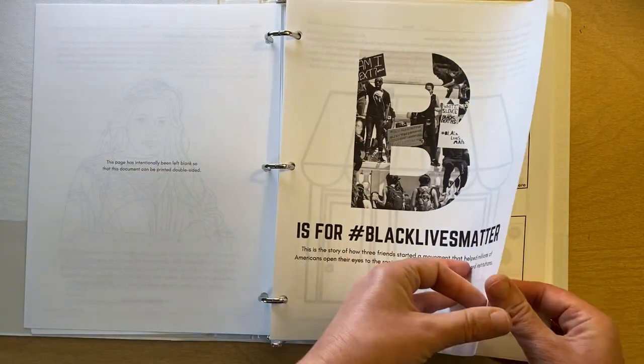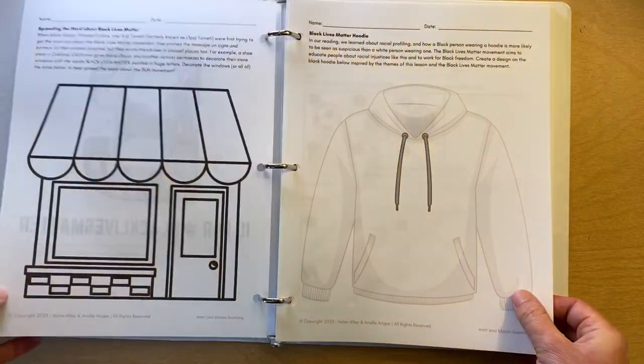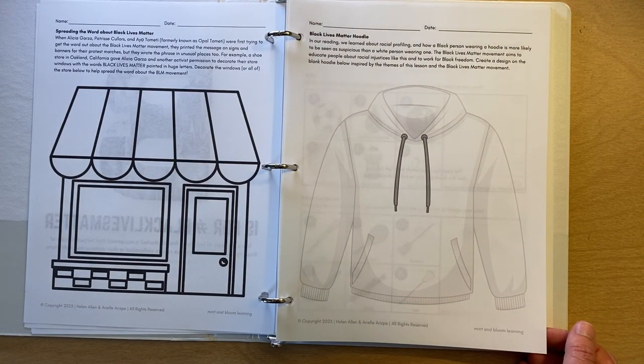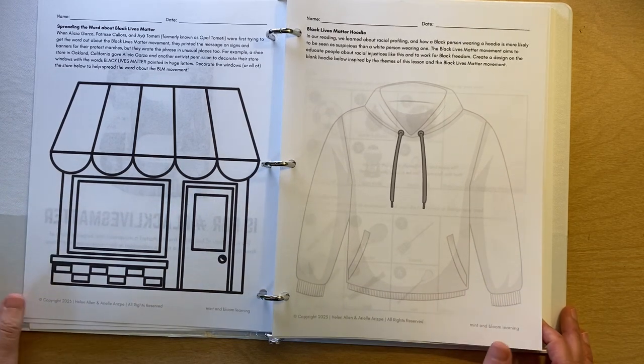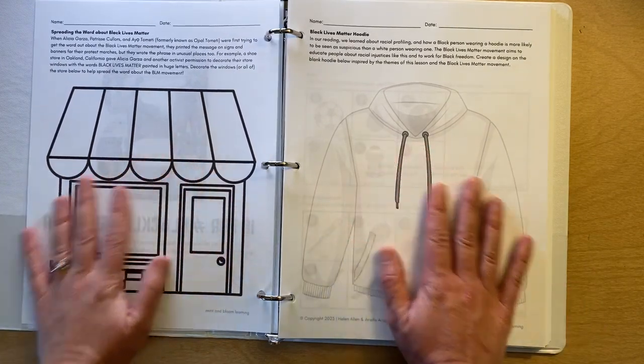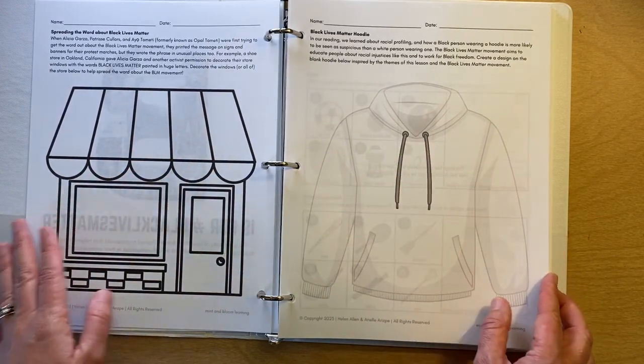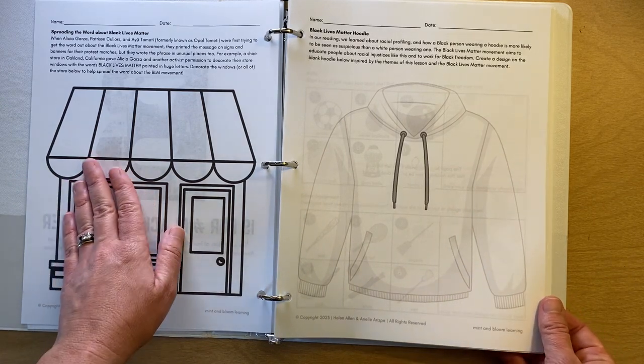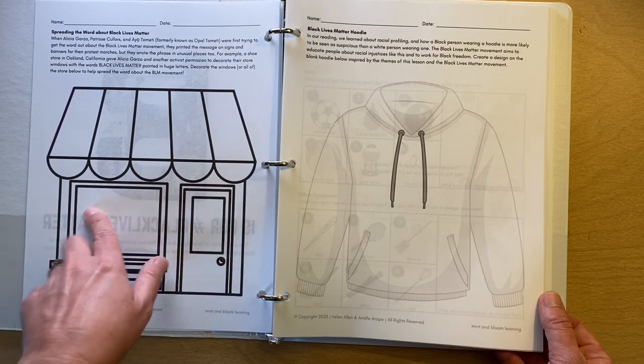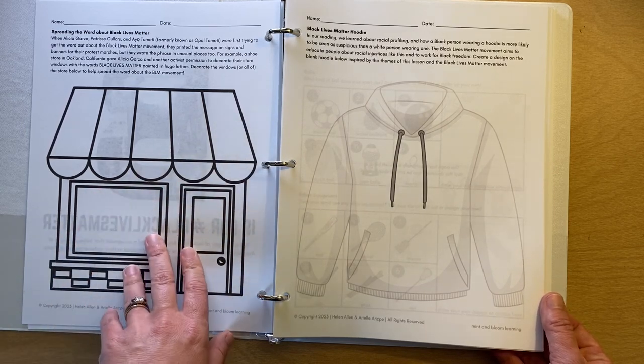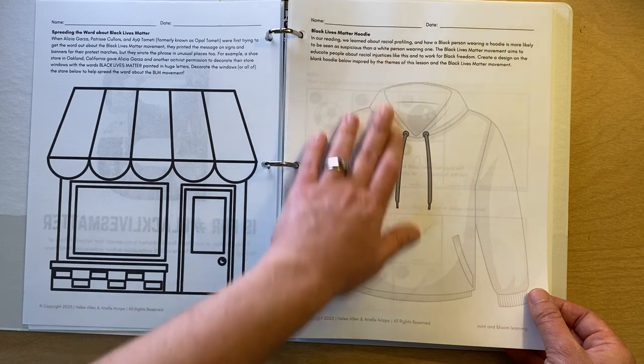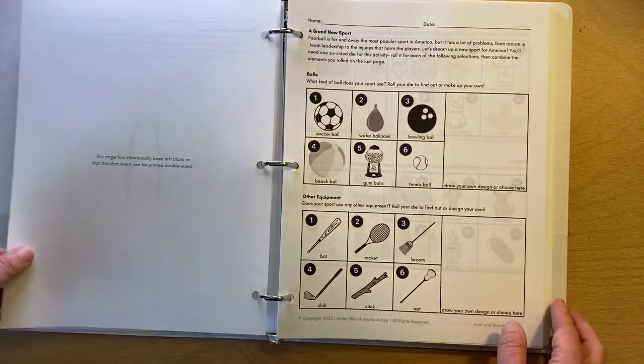B is a little bit of a special lesson because we have differentiated it a little bit based on, we have two different books recommended, one for younger and one for older students. But the activities we think all ages could do. So we have one where they can, like Alicia Garza did in Oakland, with permission from a shoe store, you can decorate the shop windows with a Black Lives Matter message. You can design a hoodie and learn a little bit about racial profiling on this page.